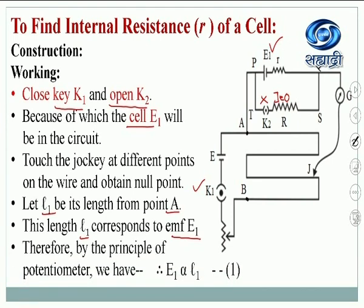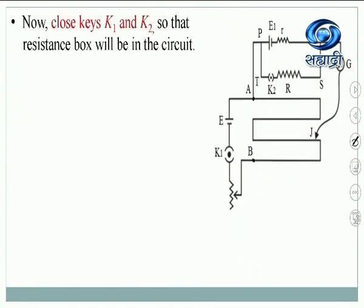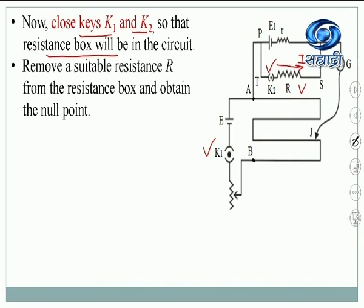According to the principle of potentiometer, E1 is proportional to L1. Now close key K1 and K2 so that the resistance box will be in the circuit. When we close K2, current will flow through this resistance, so we have a potential drop V across the resistance. Remove a suitable resistance R from the resistance box and obtain the null point.